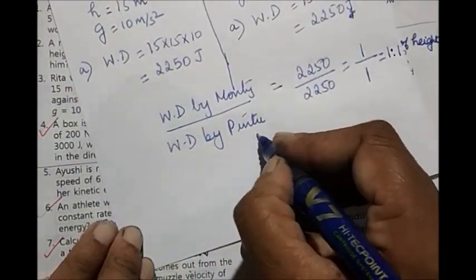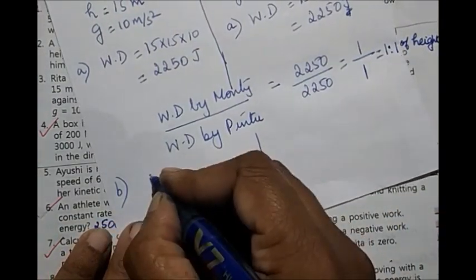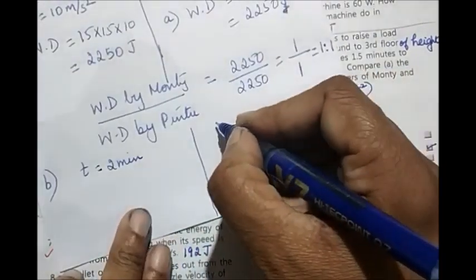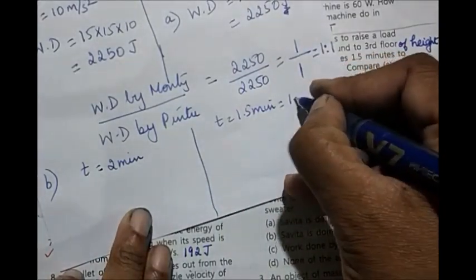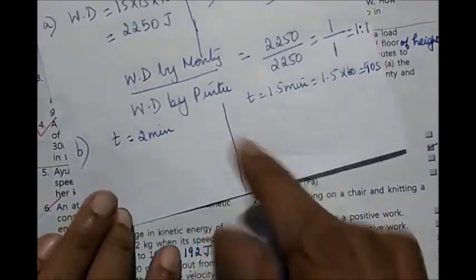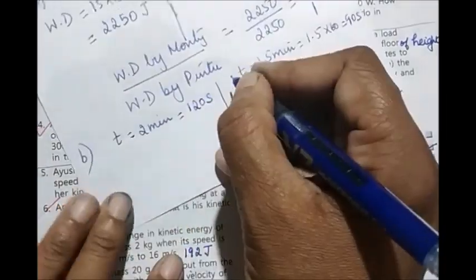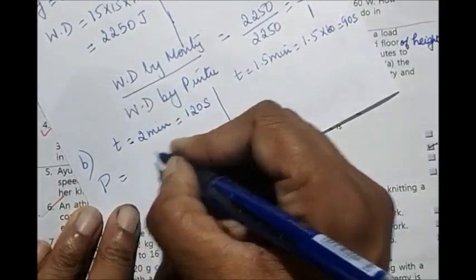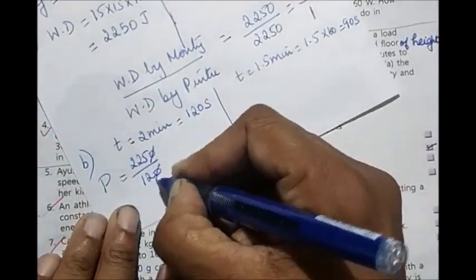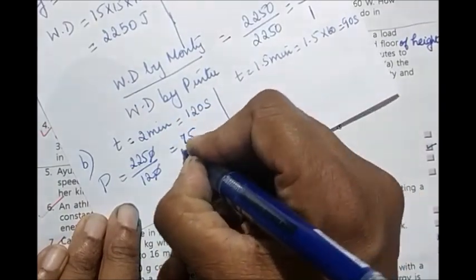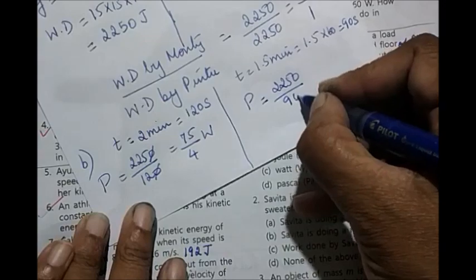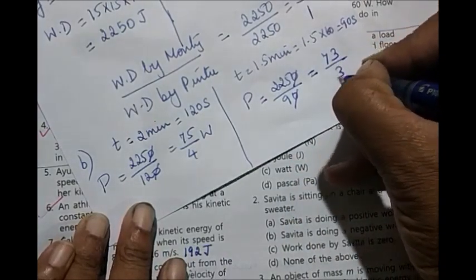Now, come to the B part. For doing the B part, we have to find the power. For that, time is involved. Monty is finishing this work in 2 minutes, that is 120 seconds. And Pintu is finishing this work in 1.5 minutes, that is 90 seconds. Power of Monty will be 2250 upon 120. Work done upon time. If you cut by 3, you would have got 75 by 4 watt. Power of Pintu will be 2250 upon 90. The time taken is 90. If you cut it by 3, you have 75 by 3 watt.